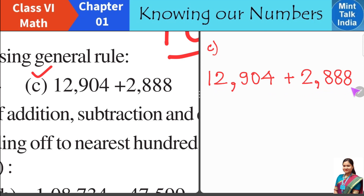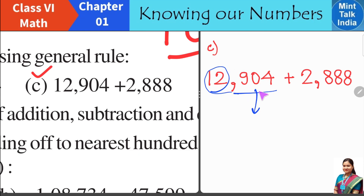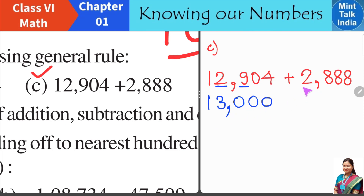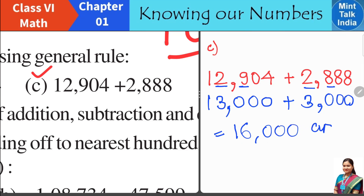Question C: 12904 plus 2888. Here the numbers are larger, so we round off to the nearest thousands. For 12904, adding a few more would take it to the next thousand, so it rounds off to 13000. For 2888, the hundreds digit is more than 5, so the thousands digit becomes 1 greater: 2 plus 1 is 3, giving 3000. Now mentally add 13000 and 3000 to get 16000. So 16000 is your estimated answer.